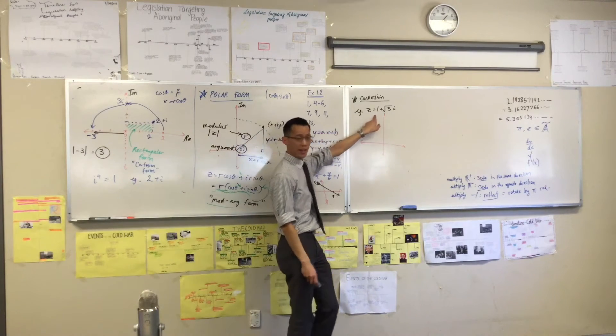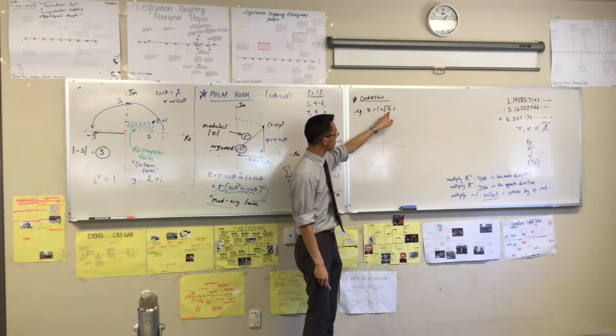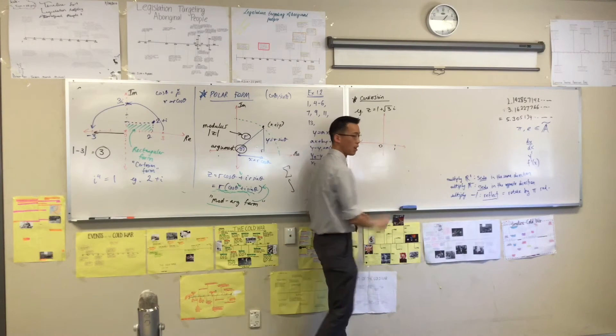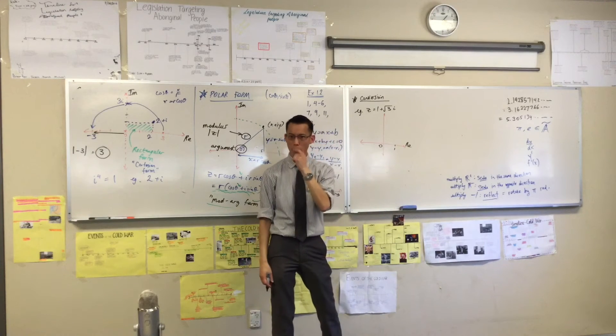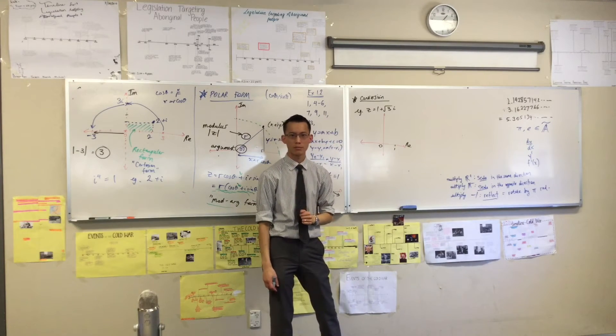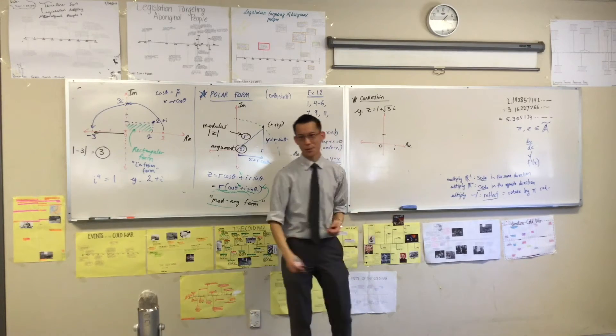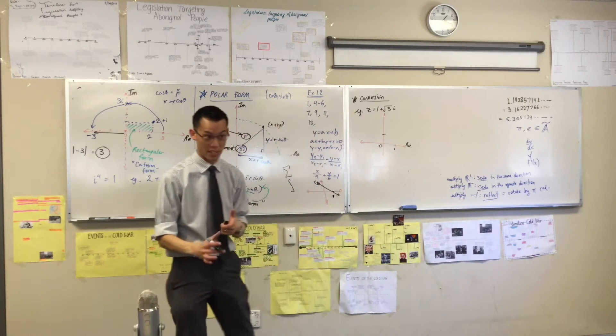So you need your Argand diagram, like so. You can see I haven't drawn the whole thing, because I know which quadrant I'm going to be in. I've got a positive number here, a positive number here.